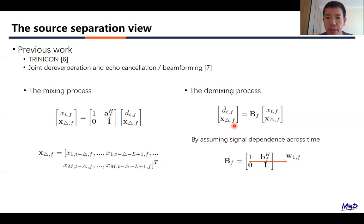By assuming signal independence across time, which is a strong assumption, the demixing matrix B has this unique form in which all its diagonal elements are unitary. So we only have to calculate its first row vector, which we denote W here.